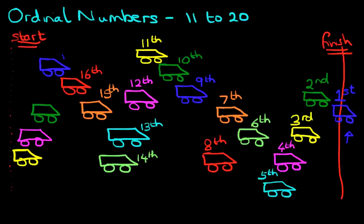And then we've got the blue car at the back is in seventeenth place. The green car is in eighteenth place. It's quite easy, isn't it? The pink car is in nineteenth place. And right at the back, near the start, is the yellow car, which is in twentieth place.